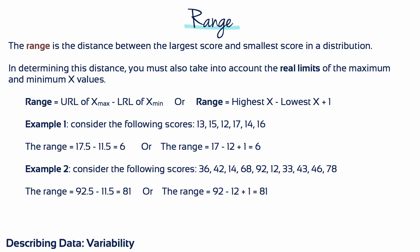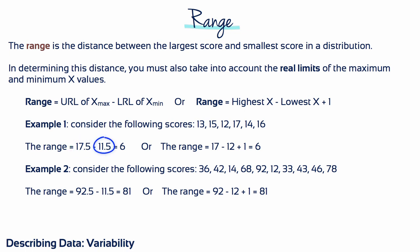Let's look at some examples. Consider the following scores: 13, 15, 12, 17, 14, and 16. The highest and the lowest values are 17 and 12. The upper real limit of 17 is 17.5, while the lower real limit of 12 is 11.5, and the difference between the two is 6. An easier way to do it is to subtract 12 from 17 and add 1, which also gives us 6.